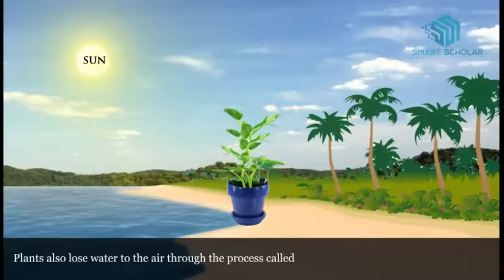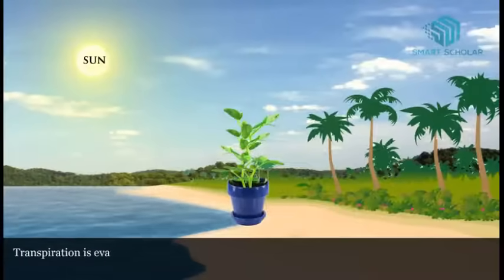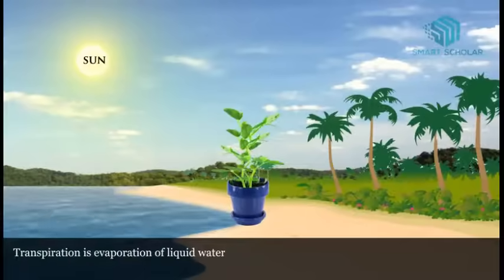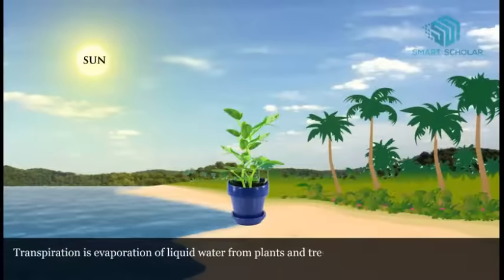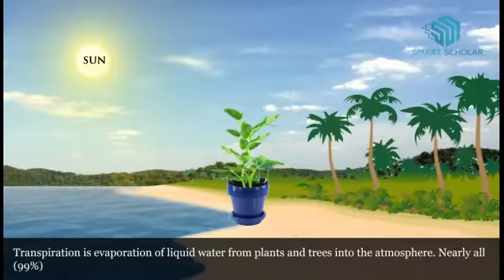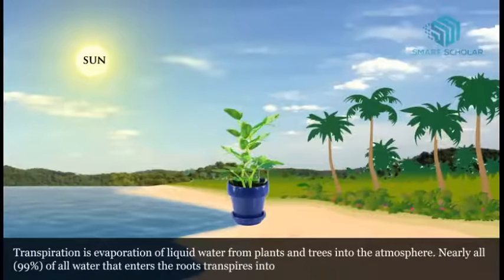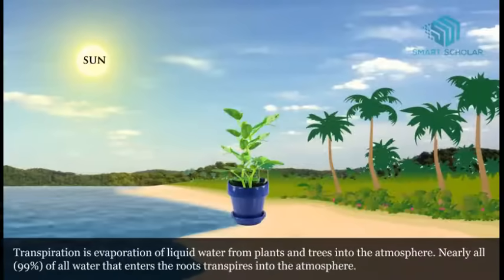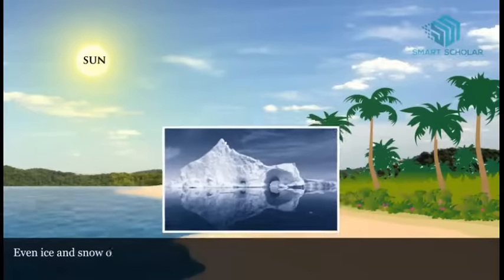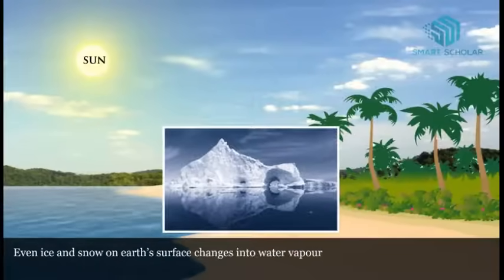Plants also lose water to the air through the process called transpiration. Transpiration is the evaporation of liquid water from plants and trees into the atmosphere. Nearly 99% of all water that enters the roots transpires into the atmosphere.